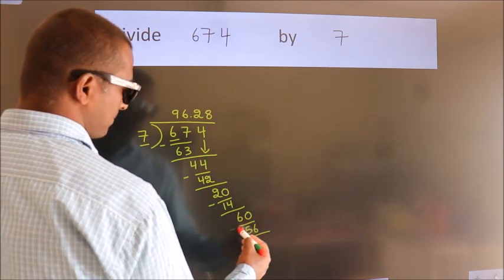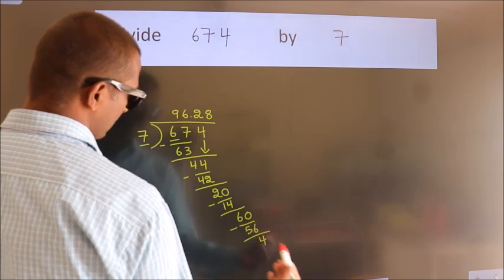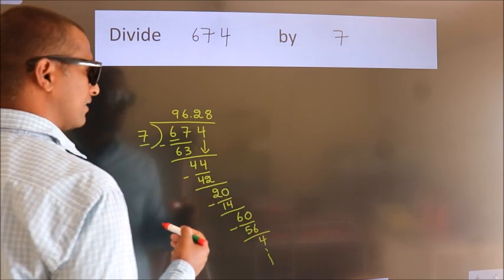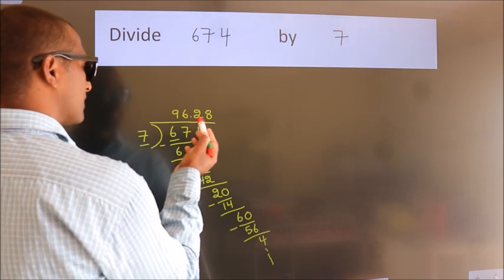Now we subtract. We get 4, and the division continues. It is enough if we do up to 2 decimal places.